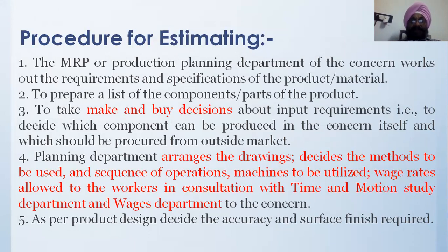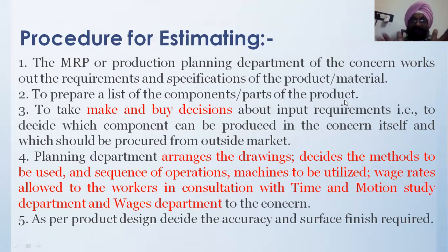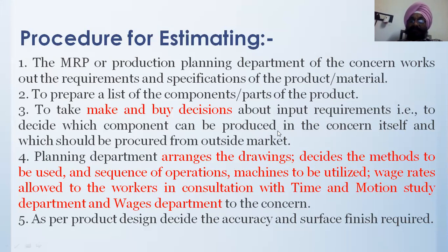Now, what is the procedure for estimating? The MRP — Material Requirement Planning — department works out the requirements and specifications of the product material. They prepare a list of components or parts of the product. Then they take a make-or-buy decision: should this part be made in-house or procured from outside? They decide which components can be produced internally and which should be bought from the outside market.